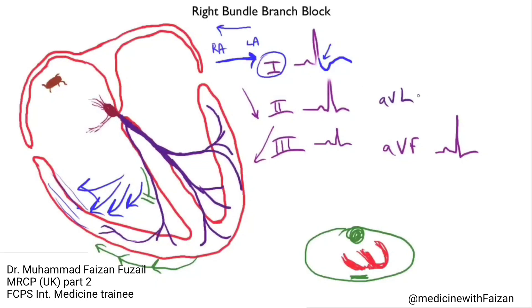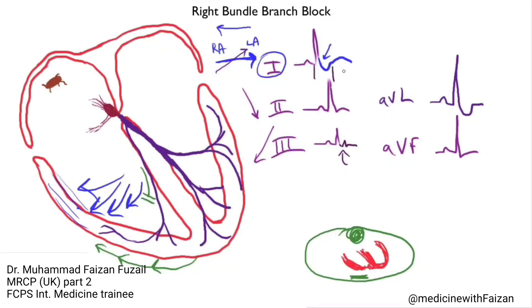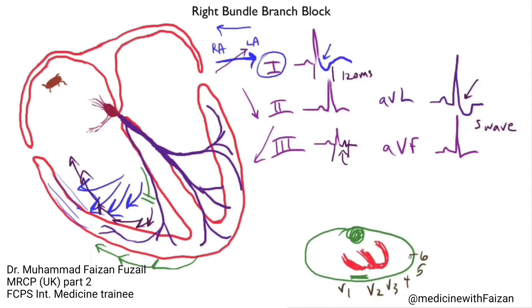AVL is going to look much like lead 1 — they usually look the same because they're both looking at the lateral wall of the heart, with AVL at 30 degrees above the horizontal. In the inferior leads, it depends on the axis, but it's not uncommon to see delayed signals there as well, since the QRS duration has widened to 120 milliseconds or greater. For V5 and V6, which are also lateral leads, the beginning part of the QRS looks normal — representing left ventricular activation — but there will be a wide S wave, the classic pattern for a right bundle branch block. Normally, V1 should have a small septal R wave and then a deep S wave, followed by an upright T wave.